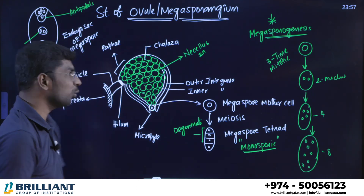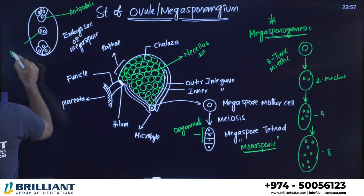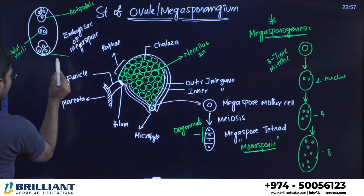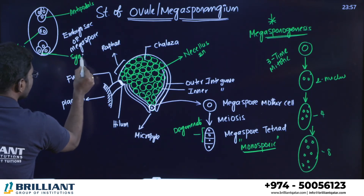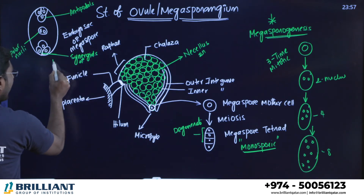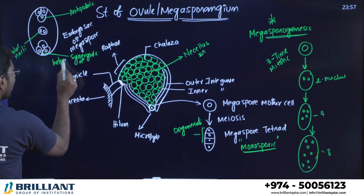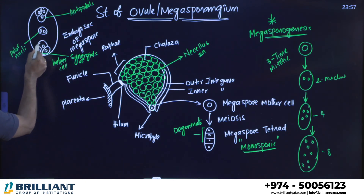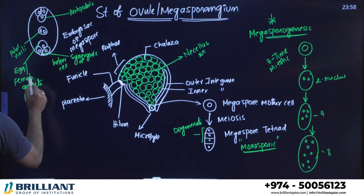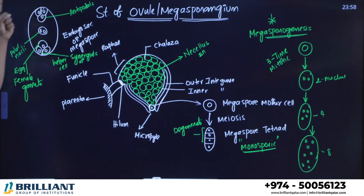The single central cell containing two haploid nuclei is known as the polar nuclei cell. The two haploid cells at the lower micropyle end are known as synergids, also called helper cells. The middle cell between the synergids is called the egg, or female gamete.